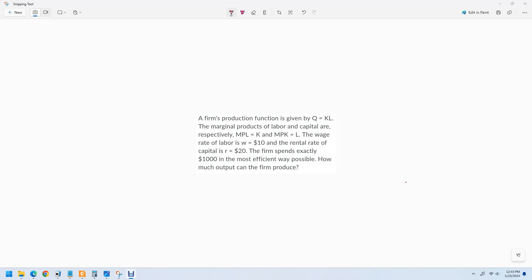Hello out there to you. In this video, we're going to try to figure out the number of capital units and labor units that we need to employ so that we can spend $1,000 and then use that to figure out what is the output.